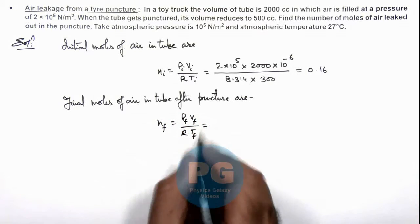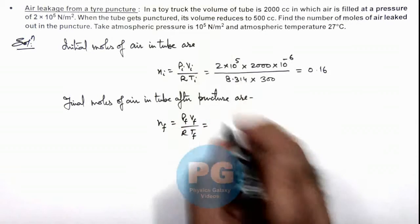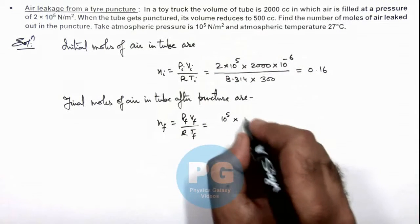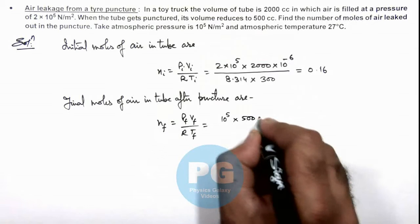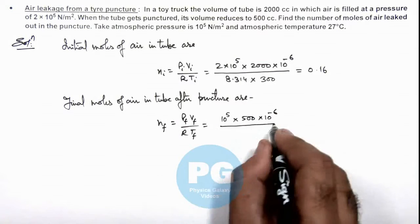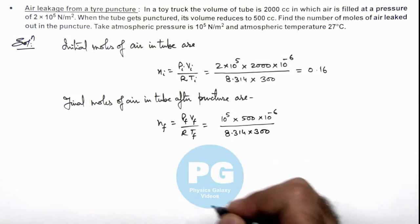Again we are using gas law. The pressure once it gets punctured will be at atmospheric pressure which is 10^5. Volume is given to us as 500×10^-6, divided by value of R is 8.314 and temperature remains same as 300 Kelvin.